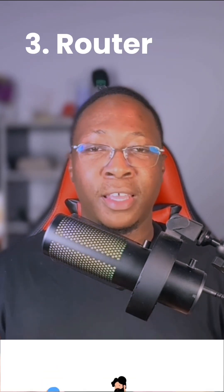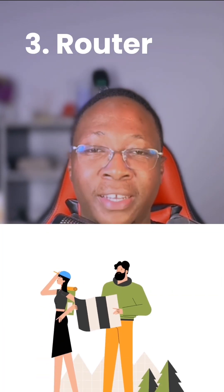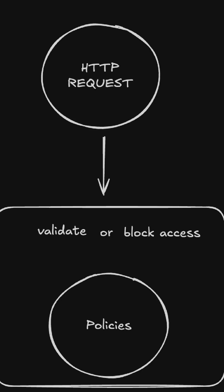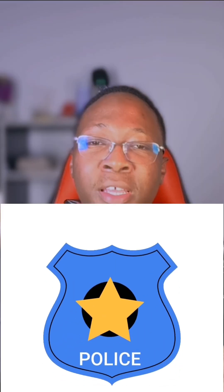If not, the request moves on to a router — think of this as a traffic indicator or a friendly guide. Before going further, your request passes through policies, which can validate or block access. Think of them like the police.